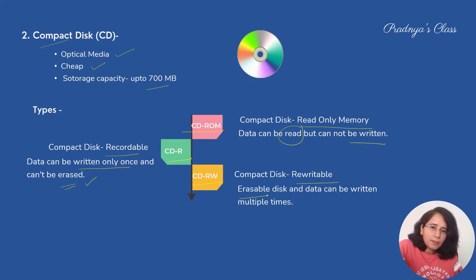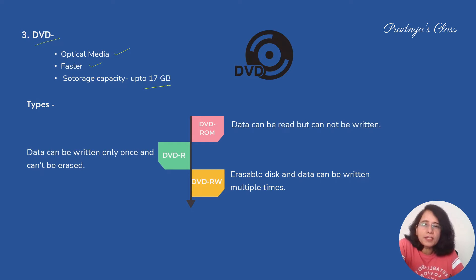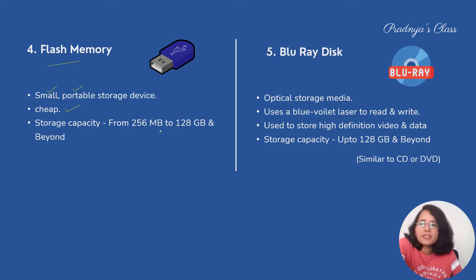The third type of storage device is DVD — also an optical media but faster than CD, with a storage capacity of up to 17 GB. The types of DVD are the same as CD: DVD-ROM, DVD-R, and DVD-RW. One more storage device is flash memory — a small, portable, and cheap storage device with a capacity ranging from 256 MB to 128 GB and beyond.